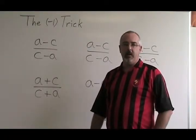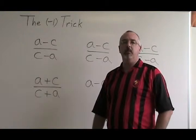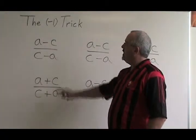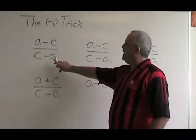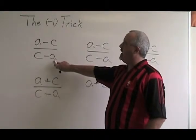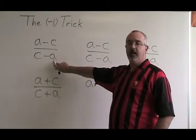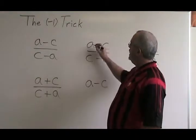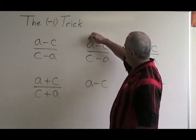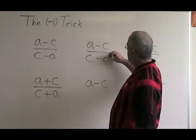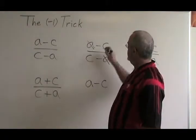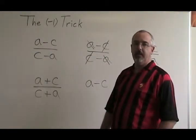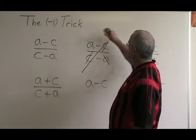When simplifying algebraic fractions, sometimes we have to use something called the minus one trick. When we have an algebraic fraction like a minus c over c minus a, sometimes we're tempted to cancel — to say there's an a on the top and an a on the bottom, I can cancel them; there's a c on the top and a c on the bottom, I can cancel them. This is not allowed.